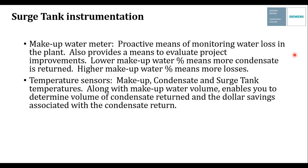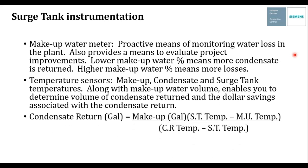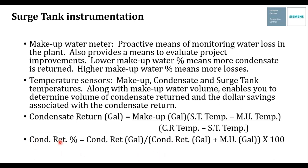Temperature sensors — makeup water, condensate, and surge tank — along with the makeup water meter enable you to calculate condensate return. Condensate return is very difficult to measure directly because it's typically mixed phase, both water and vapor. Instead, we calculate it: condensate return gallons equals the makeup water gallons times the difference between makeup water temperature and surge tank temperature, divided by the difference between surge tank temperature and condensate return temperature. From there, condensate return percentage is condensate return gallons divided by condensate return gallons plus makeup gallons, times 100.